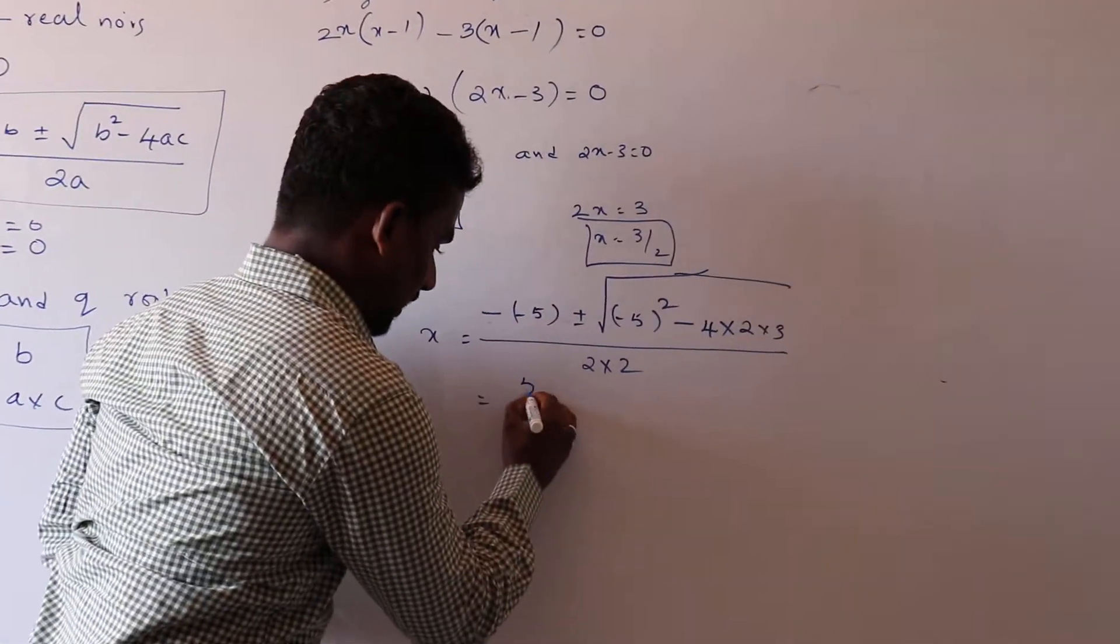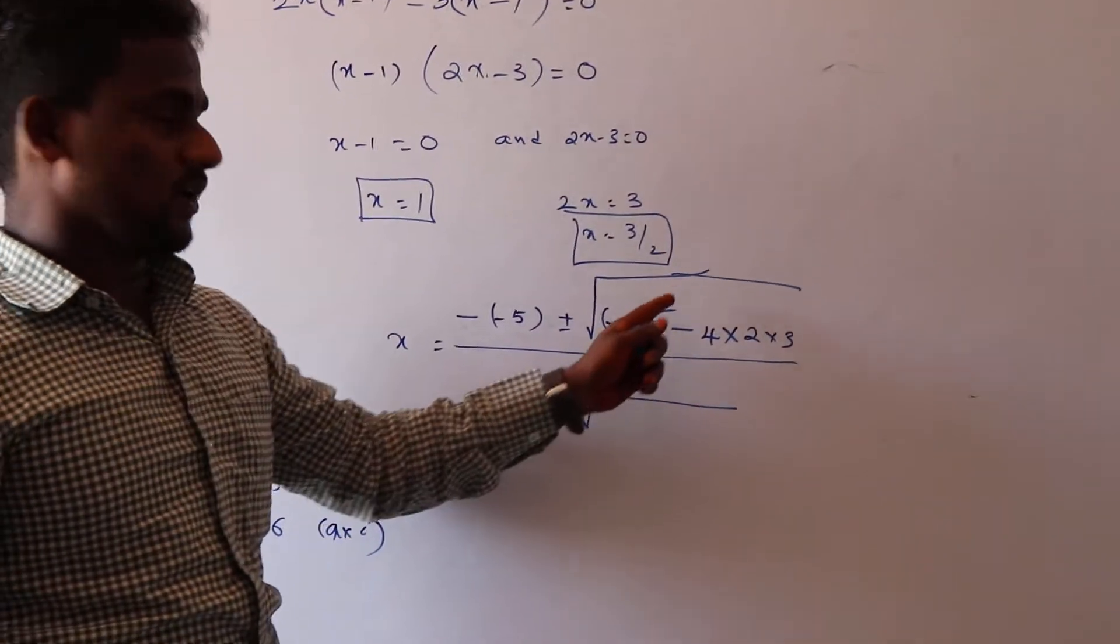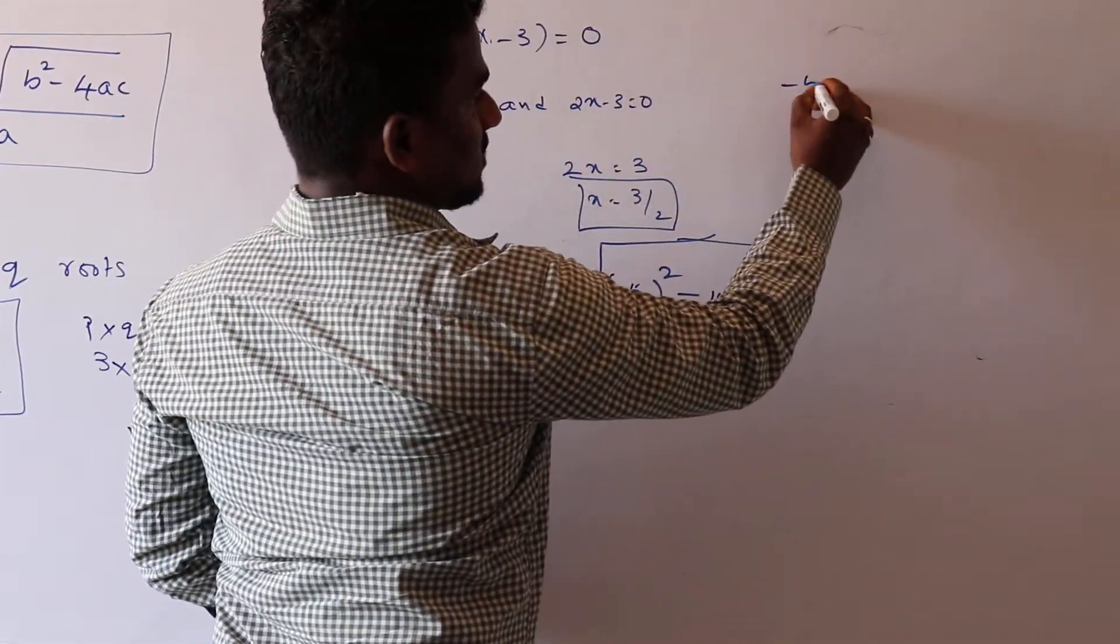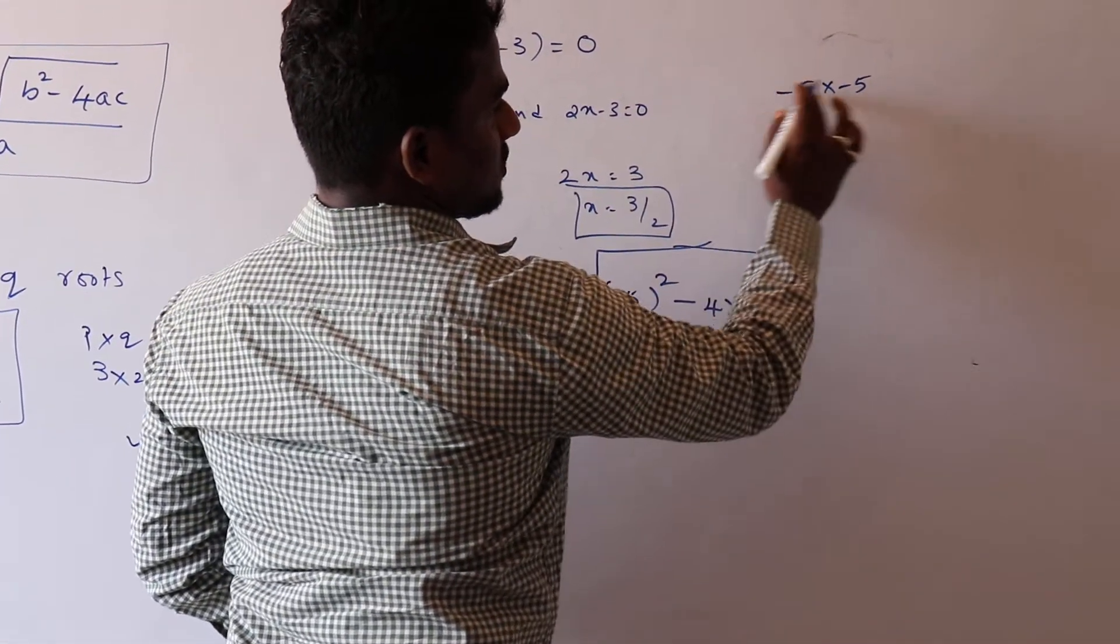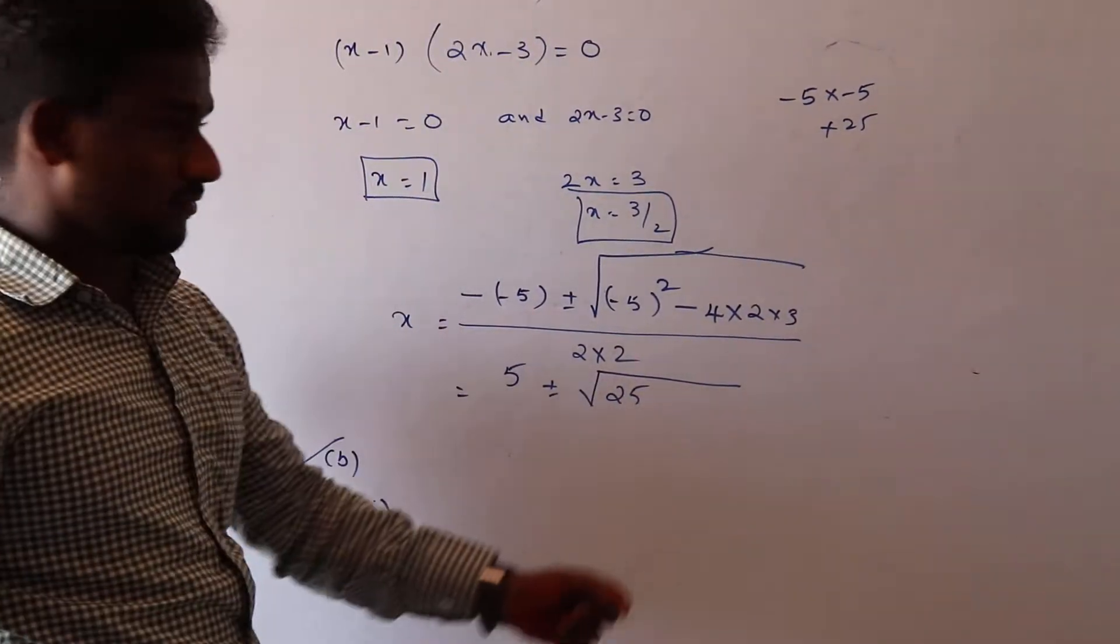This is equal to plus, that is equal to 5 plus or minus square root of minus 5 whole square. Minus 5 we have to multiply 2 times, minus into minus, plus 5 into 5, 25. That is the 25 value, 25.